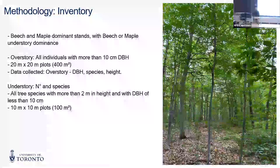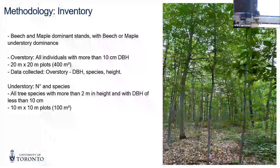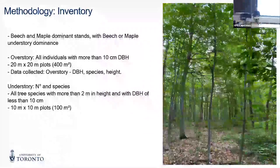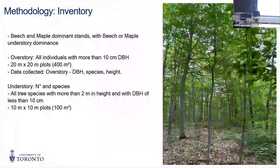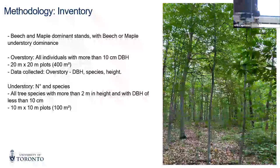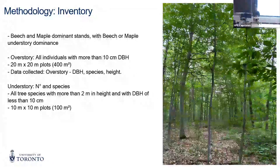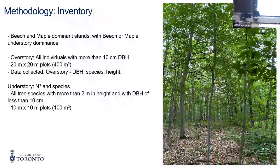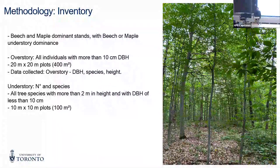For the methodology, we are considering the overstory and understory. For overstory, it's all trees with more than 10 centimeters DBH. The plots are 400 square meters, and we collected DBH, species, and tree height. For understory, this is important — it's everything above 2 meters in height and less than 10 centimeters DBH. The understory plots were 10 by 10 inside the 400 square meter plot.